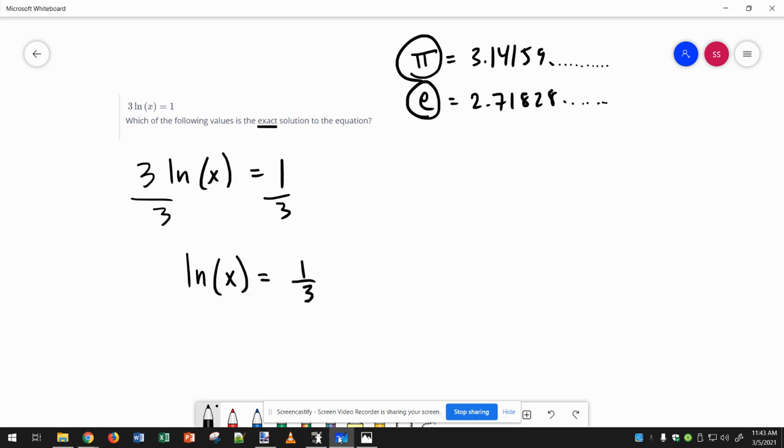And again, 1 third is exact. 0.333 is not exact. That keeps going forever. You can't possibly write down an infinite number of 3s. So that's why we write 1 divided by 3.